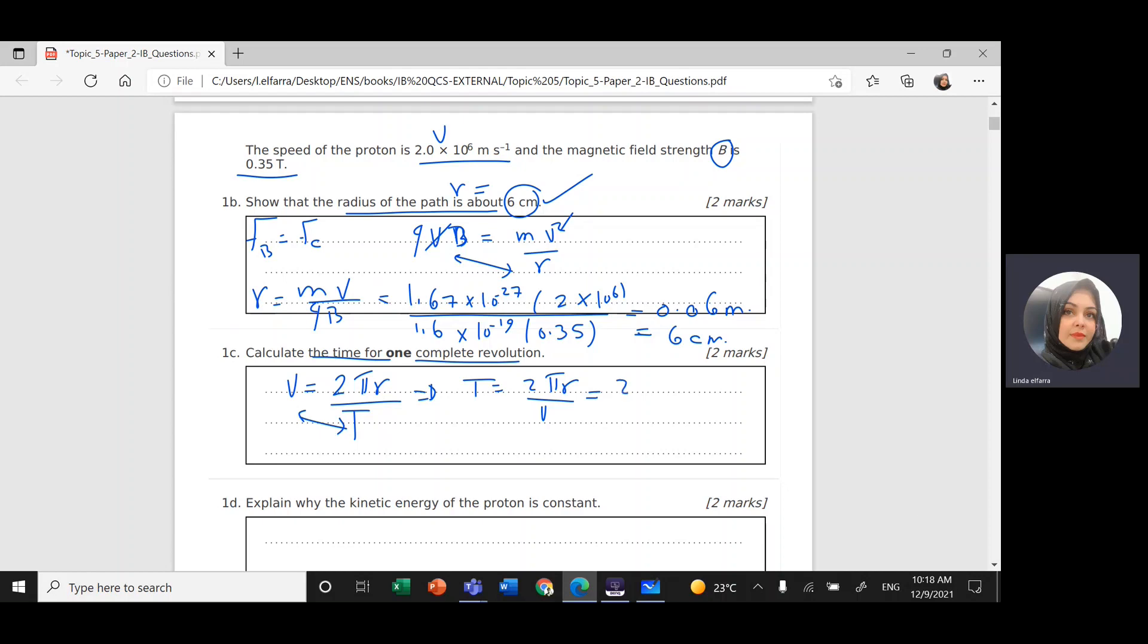So 2 pi, the radius R is 0.06. Make sure that the units are consistent. Here we're using SI units, so 0.06 meter, divided by the velocity. The velocity of the proton is 2 times 10 to the power 6. And this will give me 1.9 times 10 to the power negative 7 second.